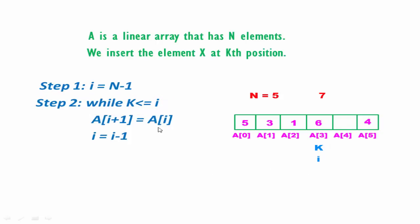Then we execute those two statements again. A[3] will be shifted to A[4], and then i will be decremented by 1. Then again we check the condition. Now i equals 2 and k equals 3, so this condition is false.